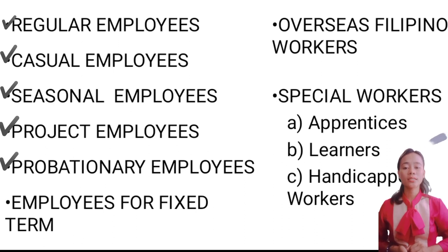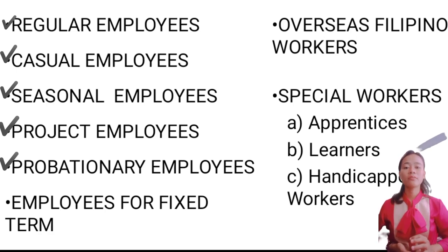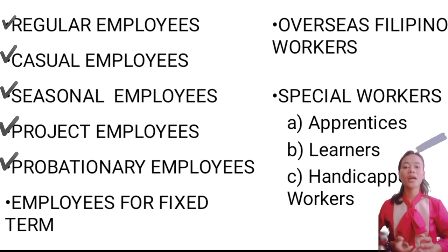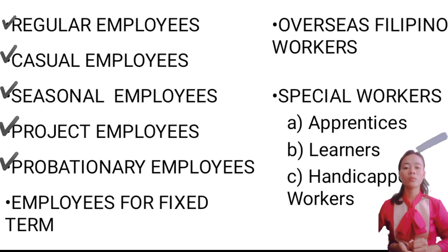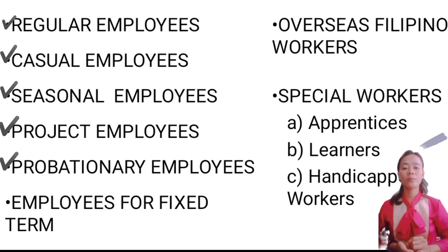The fifth is probationary employees, also known as trial period employees. These are individuals who have recently been hired by a company or organization and are undergoing a probationary period — a trial phase designed to evaluate the employee's performance, skills, and suitability for their position before confirming them as permanent employees.